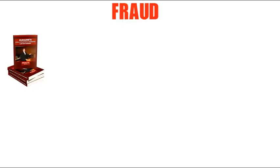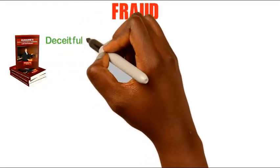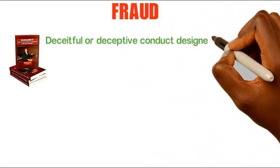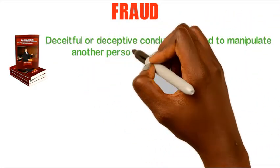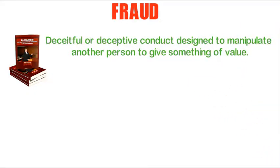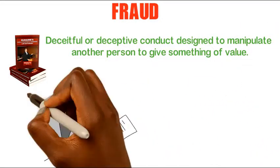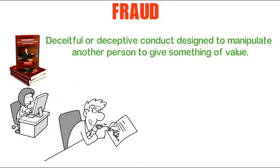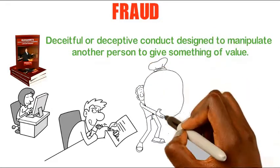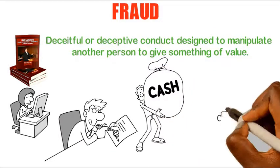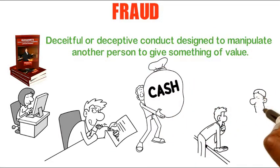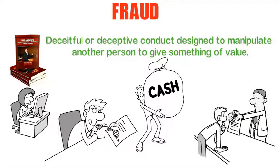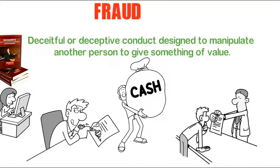Fraud is the next concept we will look at. De Haim's Law Dictionary defines fraud as a deceitful or deceptive conduct designed to manipulate another person to give something of value. For example, a civil servant forges the signature of his boss on a cheque in order to withdraw the company's money. He has intentionally deceived the bank to gain an unfair advantage by forging his boss's signature. This is what is termed fraud.